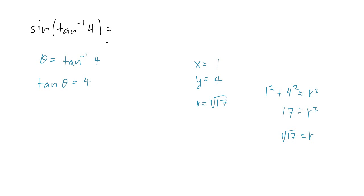Now, we go back to our original expression. We want to know sine of an angle, theta, tangent inverse of 4. And sine of an angle is always y over r, so this will be 4 over the square root of 17. And there you have it. I hope this has helped, and thanks for watching.